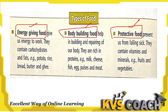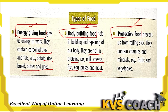For energy, we eat foods that contain carbohydrates and fats, like potato, rice, bread, butter, and ghee — these are energy-giving foods. For body building, we need protein-rich food like milk, cheese, fish, egg, pulses, and meat — these are body-building foods.